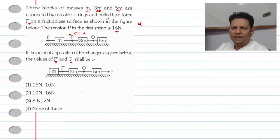The acceleration A equals F divided by total mass. So F_net divided by total mass, which implies that acceleration A equals F divided by M plus 3M plus 5M, so this is F divided by 9M.